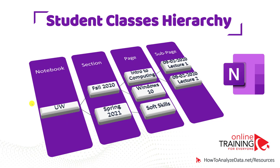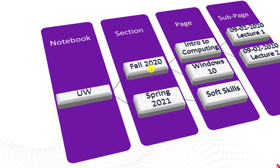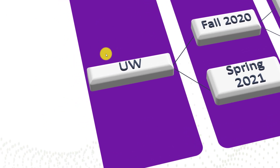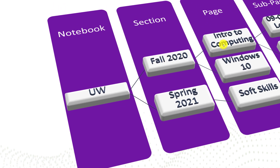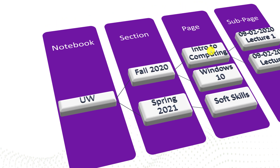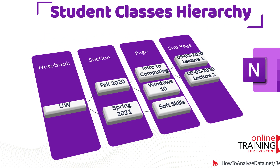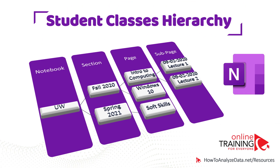If you are a student, this is how you might consider organizing your data. For example, if you study at the University of Wisconsin, you might have a notebook related to that university. Your two sections might be Fall of 2020 and Spring of 2021. In Fall of 2020, you might be taking two classes — Introduction to Computing and Windows 10 — and organize your subpages as lectures from each class. Having the correct organizational structure will allow you to navigate through OneNote quickly and find what you're looking for very easily.